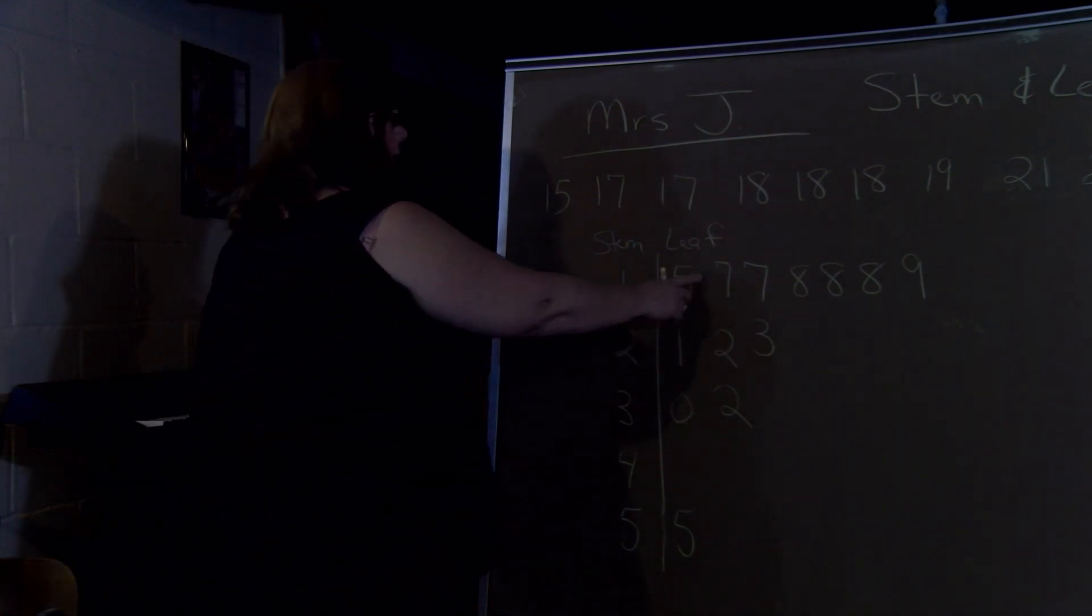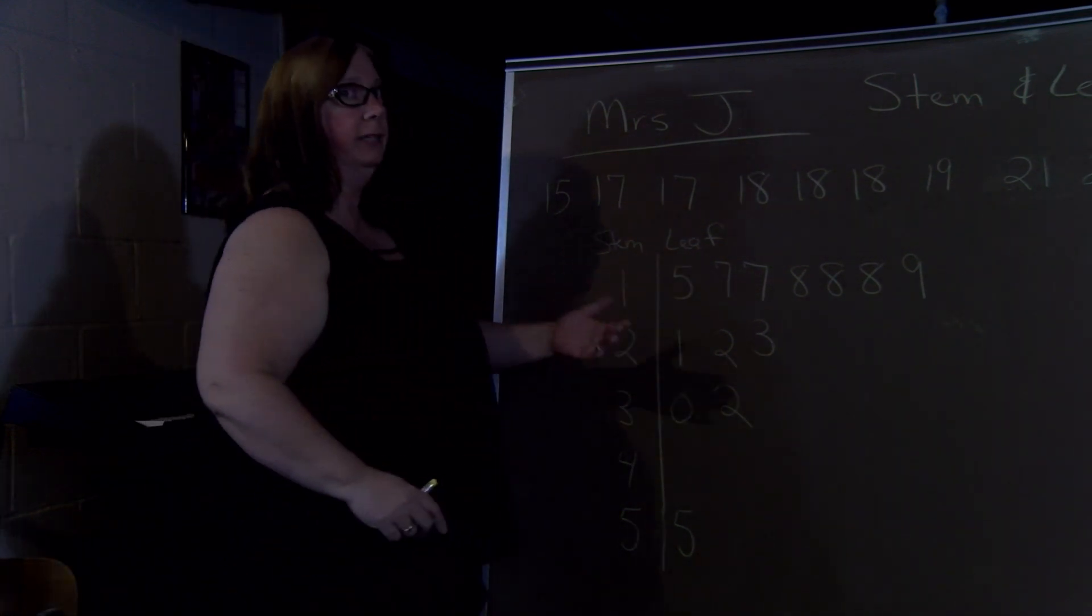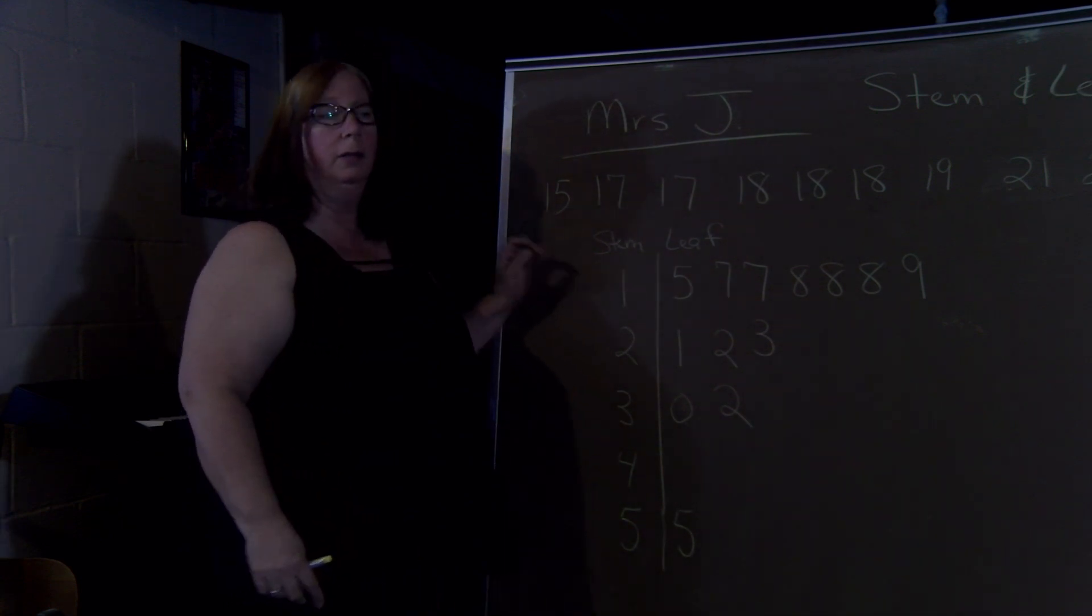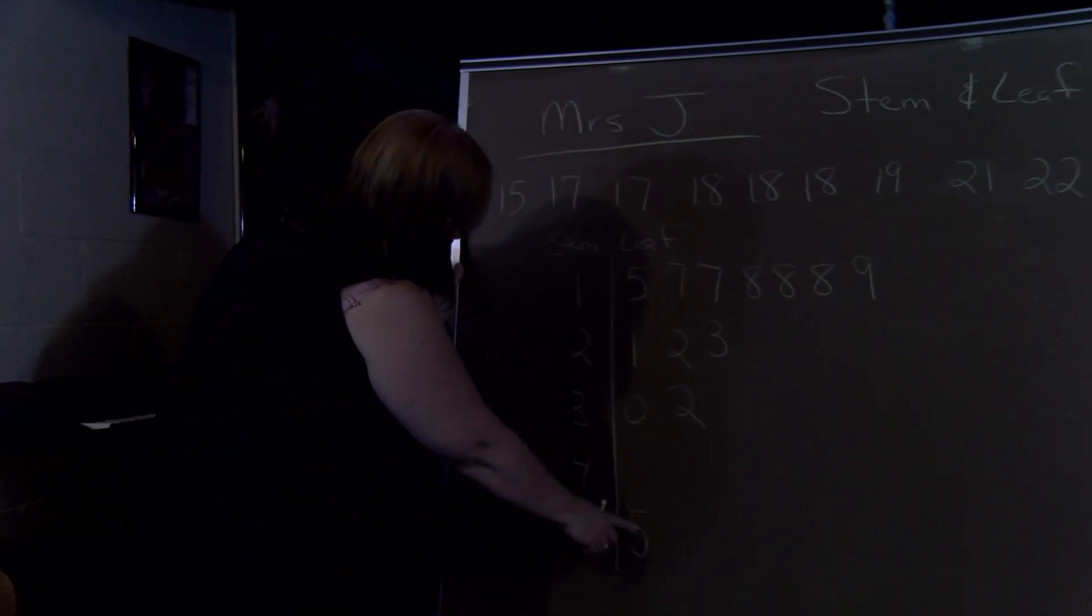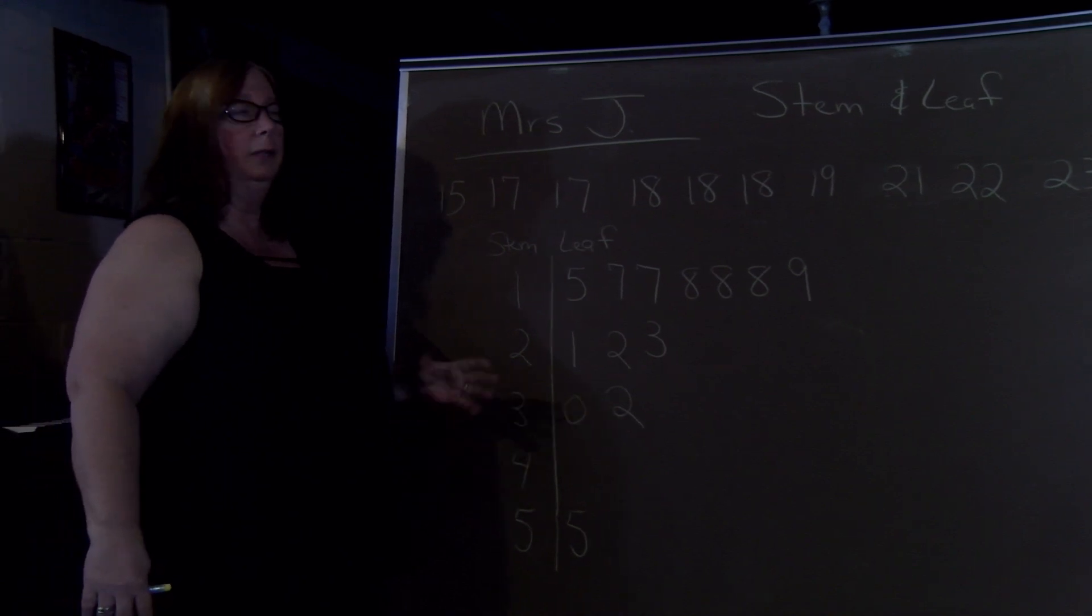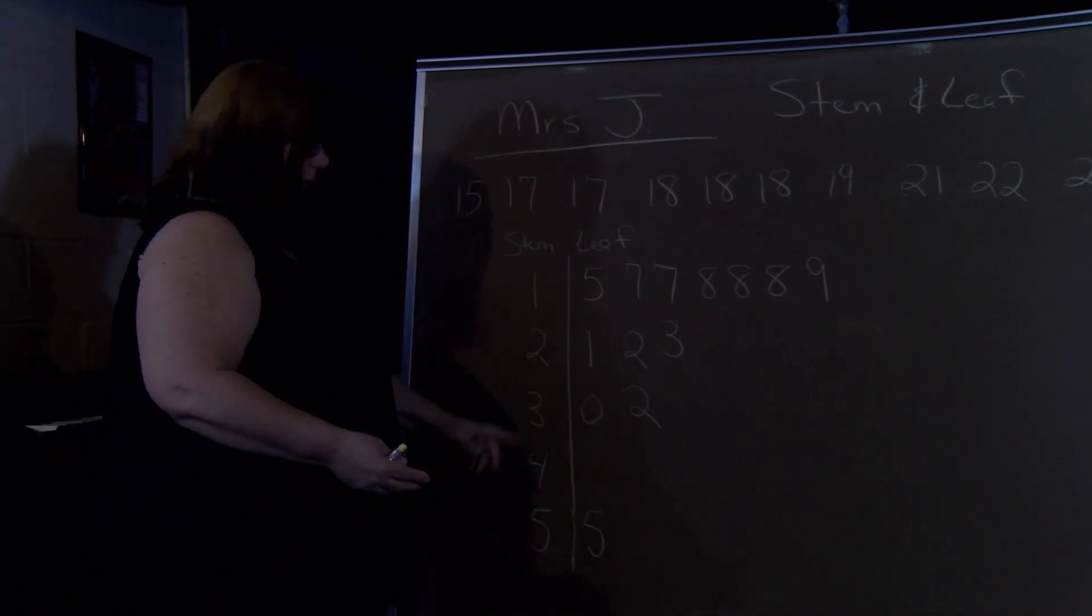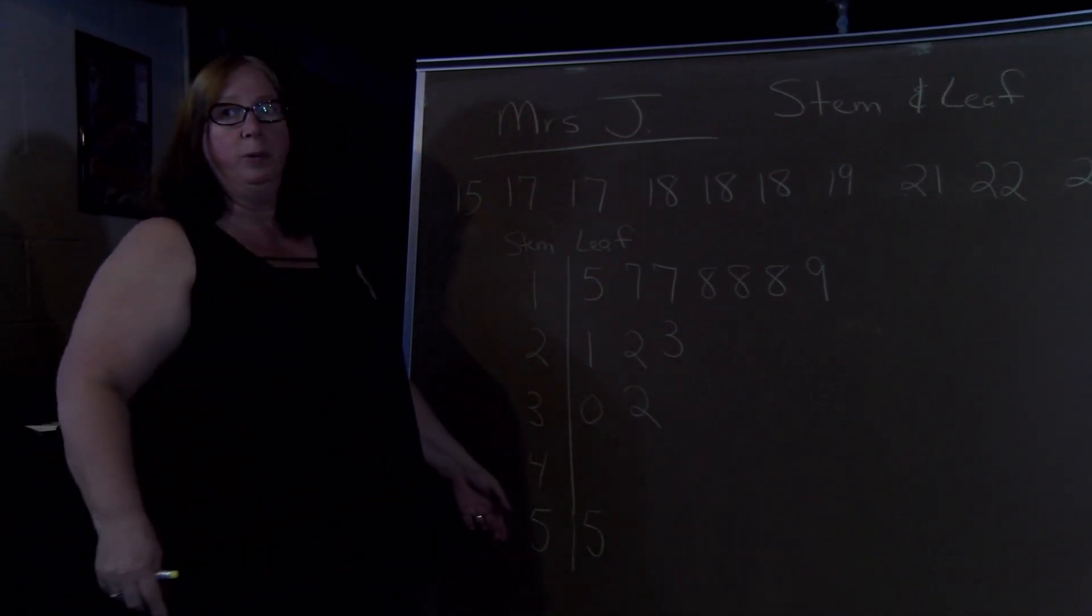But your smallest value in this case would be 15. And then if it was in thousands, it would be 15,000. Your largest value is 55 or 55,000, depending on the units. And if it was the 10th position, then it'd be 5.5.